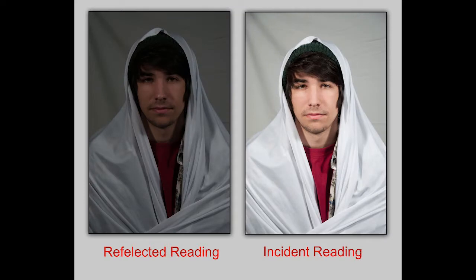We get a slightly different result when the person has white. Again, the reflective reading tries to make everything look middle gray, just like your gray card. The incident reading on the right, again done at the same exposure as the guy dressed in black — 1/125th of a second at f5.6 — is the correct exposure. All tones — the background, the white sheet, and his face — are very well exposed. If we tried to use a reflected reading, it would come out way too dark.